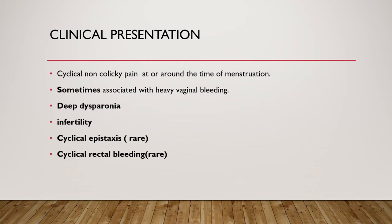The clinical presentation of this condition includes cyclical, non-colicky pain at or around the time of menstruation. It is sometimes associated with heavy vaginal bleeding, but not always. Other presentations include deep dyspareunia, infertility, cyclical epistaxis, and cyclical rectal pain — though these last two are rare and depend on the site of the endometriosis, which can be in unusual locations such as the pleural cavity, nasal cavity, or bowel.